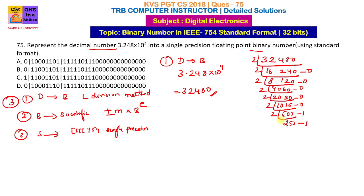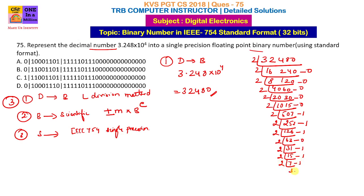Applying the L division method: 2 into 126 remainder 1; 2 into 63 remainder 0; 2 into 31 remainder 1; 2 into 15 remainder 1; 2 into 7 remainder 1; 2 into 3 remainder 1; 2 into 1 remainder 1.